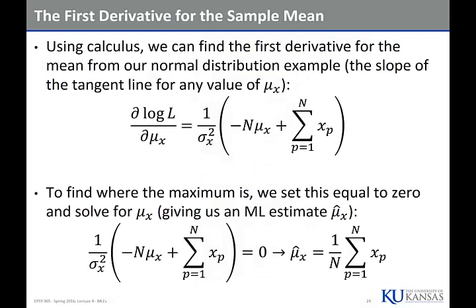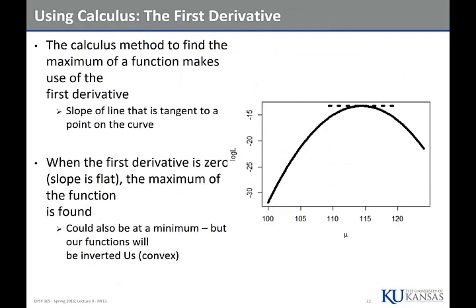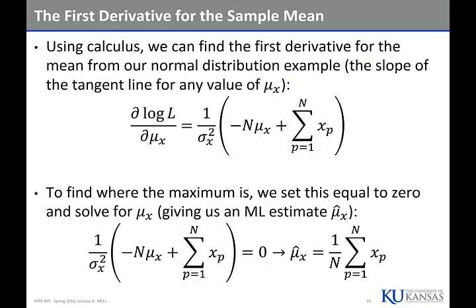If we were to take our log likelihood and take the first derivative with respect to the mean, we could get a new function out of it. If we set that equal to zero and solve for mu, we get our MLE. It turns out our MLE is 1 over N times the sum of X — which is the sample mean. We did the brute force method, and then calculus comes in and says, oh look, we can just do this in a couple of lines.